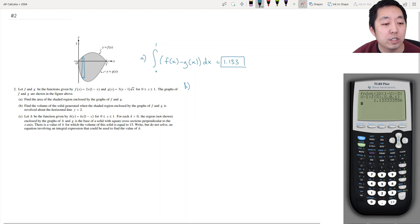Find the volume of the solid generated when the shaded region enclosed by the graphs of f and g is revolved around the horizontal line y equals 2. So y equals 2 is up here somewhere, and when I revolve this rectangle, my representative rectangle, it's going to sweep out a disk.